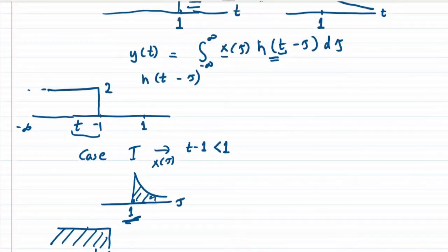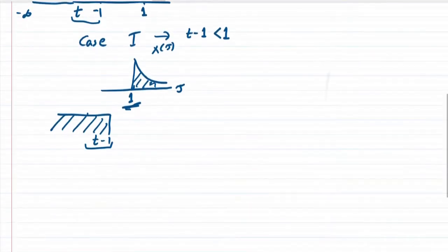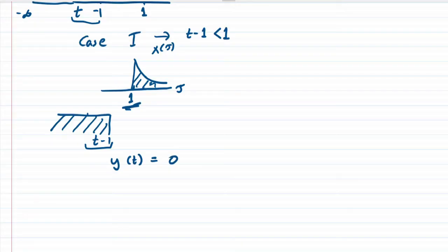If there is no overlap, that would mean y(t) equals 0, and this is for the case when t is less than 2. This is our first case.